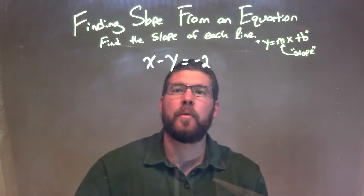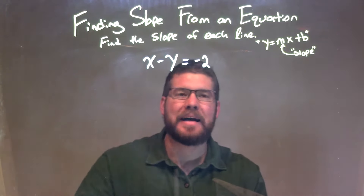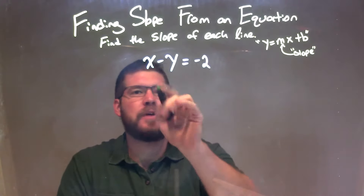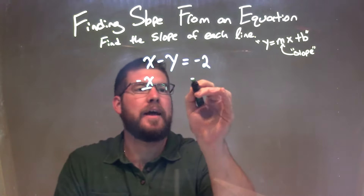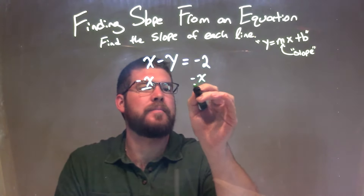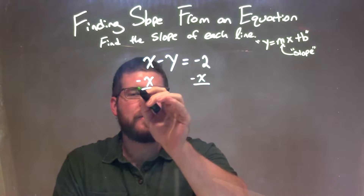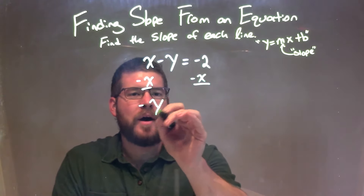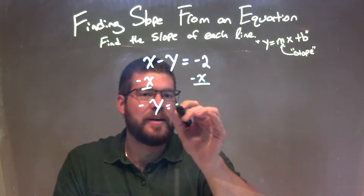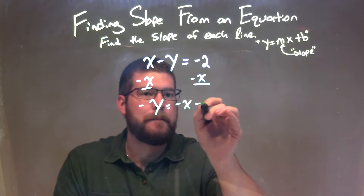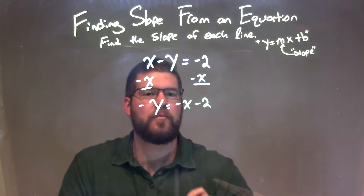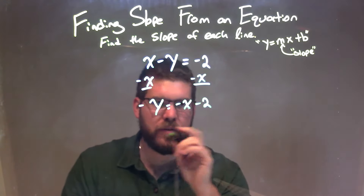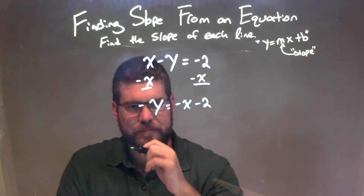Well, I need to isolate the y, get y by itself. So to do that, I first need to subtract x from both sides. So let's subtract x from both sides. x is eliminated on the left, giving me a negative y on the left, and then a negative x minus 2 on the right. Let's put the negative x first — they're not like terms, cannot combine.